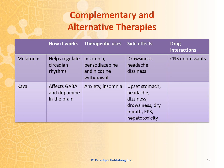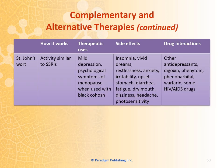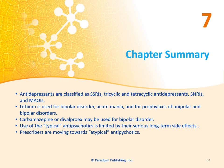There are also some complementary and alternative therapies, including melatonin, which helps regulate circadian rhythms, and kava, which affects GABA and dopamine in the brain. There's also St. John's Wort, which acts similarly to SSRIs. That's all for chapter 7. If you have any questions, please let me know.